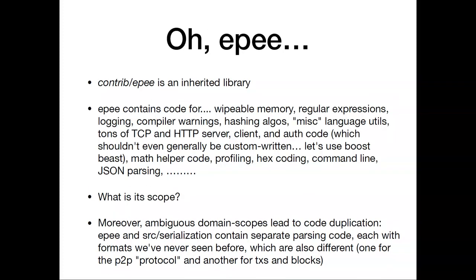Contrib/epee is an inherited library. It contains code for wipeable memory, regular expressions, logging, compiler warnings, hashing algorithms, miscellaneous language utilities, tons of TCP and HTTP server code, client code, authentication code — and that TCP and HTTP stuff shouldn't even be vendored; it should basically use an existing well-maintained library. There's also a bunch of math helper code, profiling, hex coding, command line stuff, JSON parsing. So what is epee's scope exactly? If we look at the set of functionality described by those modules, why doesn't this stuff go somewhere else? And why doesn't more stuff go into epee? The scope is completely ambiguous.